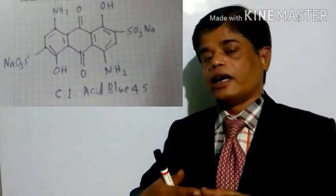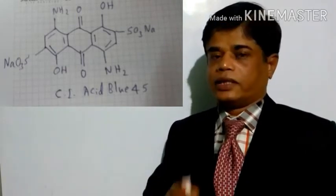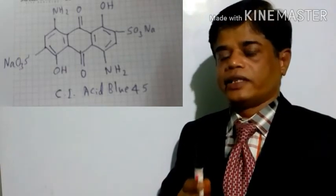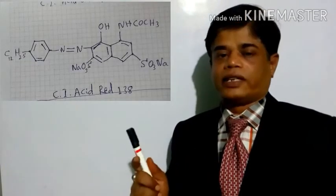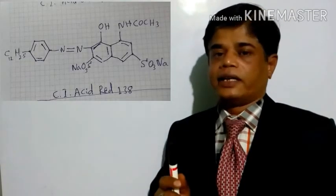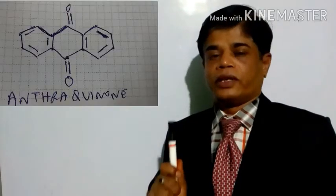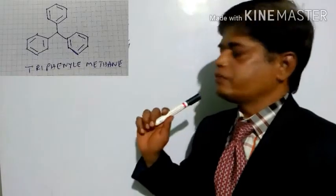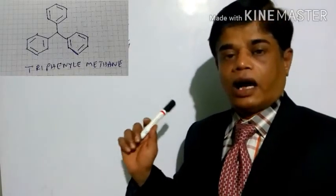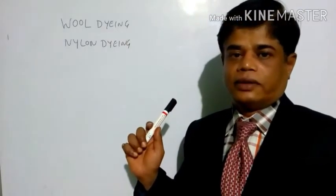Like this, the linkages happen. This is the base — the mechanism involved in acid dyeing is the attraction between the anions and cations. Acid dyes are of different types.